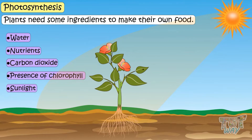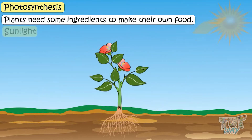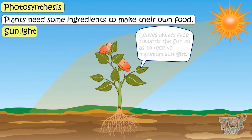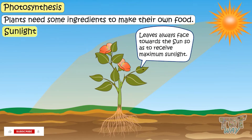First is sunlight. It is the energy source. Leaves get this energy during the daytime from sunlight. Leaves always face towards the sun so as to receive maximum sunlight.